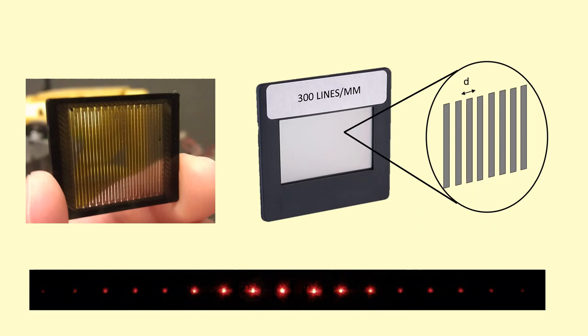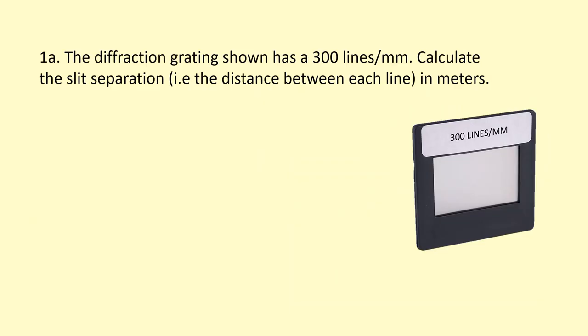The diffraction grating shown has 300 lines per millimeter. Calculate the slit separation, i.e., the distance between each line in meters. So we have 300 lines per millimeter. In order to figure out the millimeters between each line, we need to go 1 over the lines per millimeter.